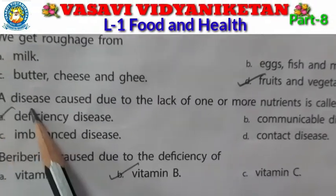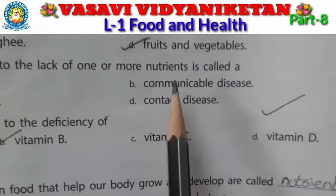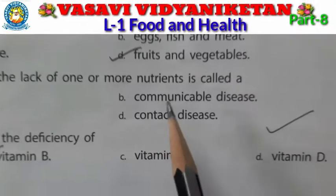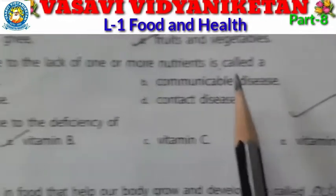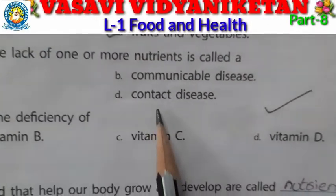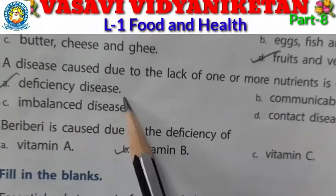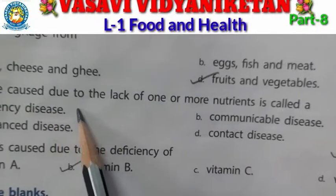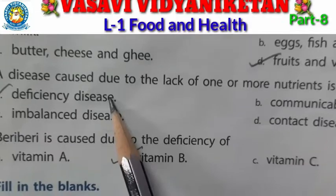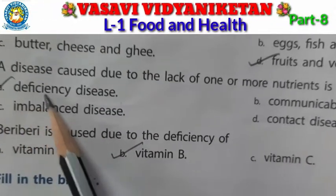Question 4: A disease caused due to the lack of one or more nutrients is called — deficiency disease, communicable disease, imbalanced disease, or contact disease? A is the correct answer: deficiency disease. Tick the A answer.